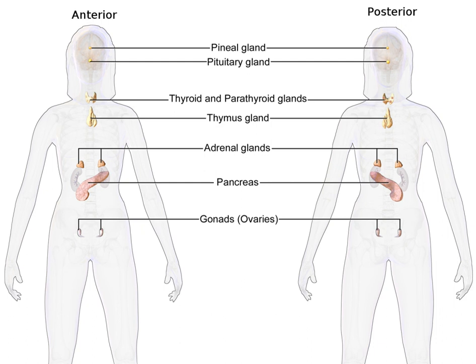Endocrinology is the study of the endocrine system in the human body. This is a system of glands which secrete hormones. Hormones are chemicals which affect the actions of different organ systems in the body. Examples include thyroid hormone, growth hormone, and insulin.